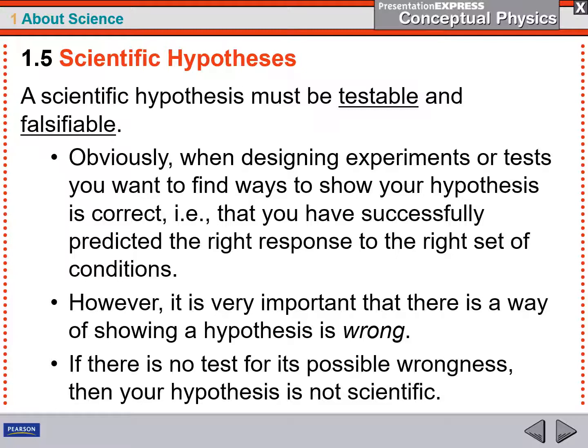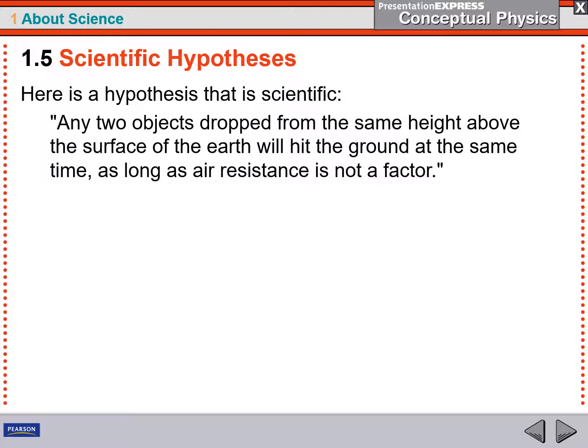So a scientific hypothesis must both be testable and falsifiable. Obviously you want to have ways to show that you're right, but you have to potentially be able to show that you're wrong. I'm going to give you some examples here in just a minute.